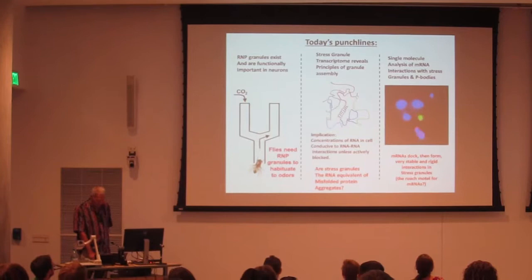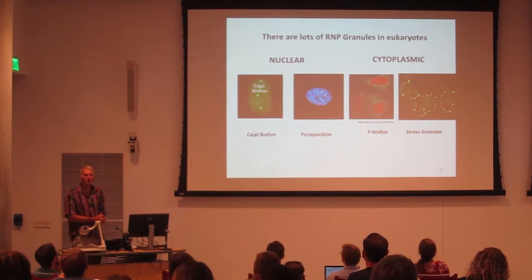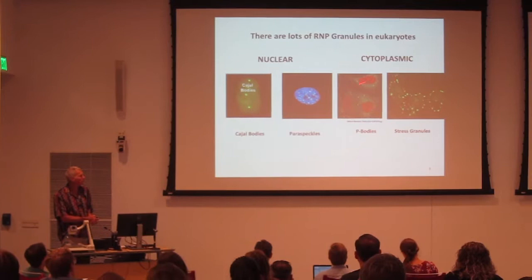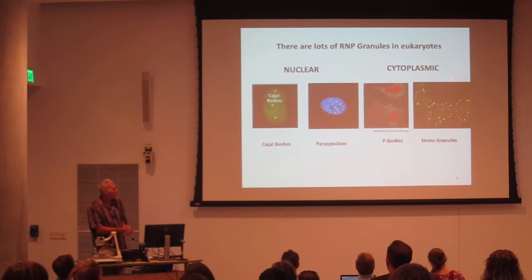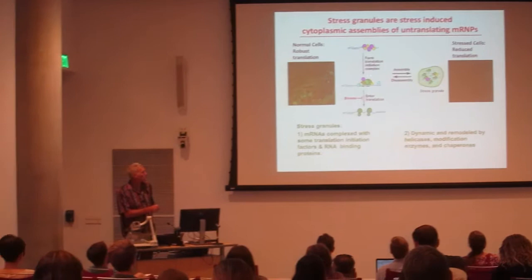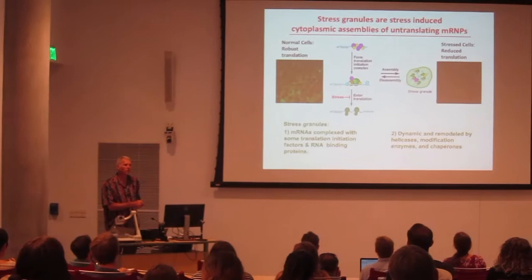The advent of GFP as a way to tag proteins has made us all realize that there are all kinds of assemblies in cells that we didn't know about. Many of these contain both RNA and protein. They're in the nucleus—things like Cajal bodies or structures called paraspeckles—and in the cytoplasm there are things like P bodies and stress granules. Today I really want to talk about stress granules.